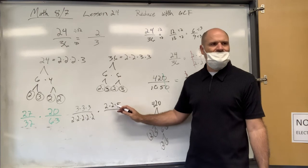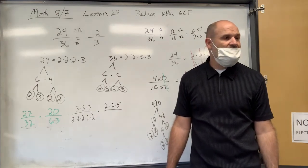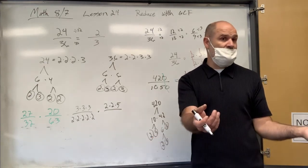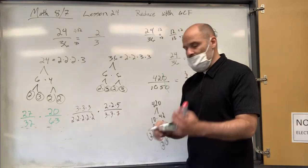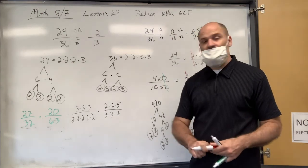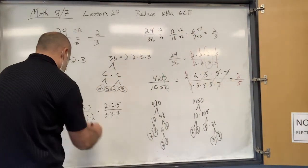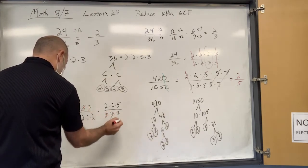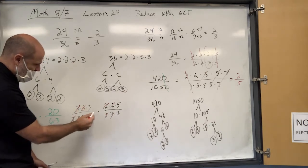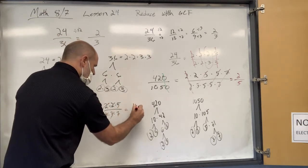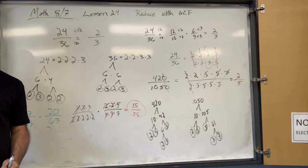What's 63? Seven times nine — nine breaks down to three times three, so 63 is 3×3×7. Now I take out the red pen and cancel matching factors — three cancels three. What's left? Three times five over two times two times two times seven — that's 15 over 56. So 27/32 × 20/63 = 15/56.